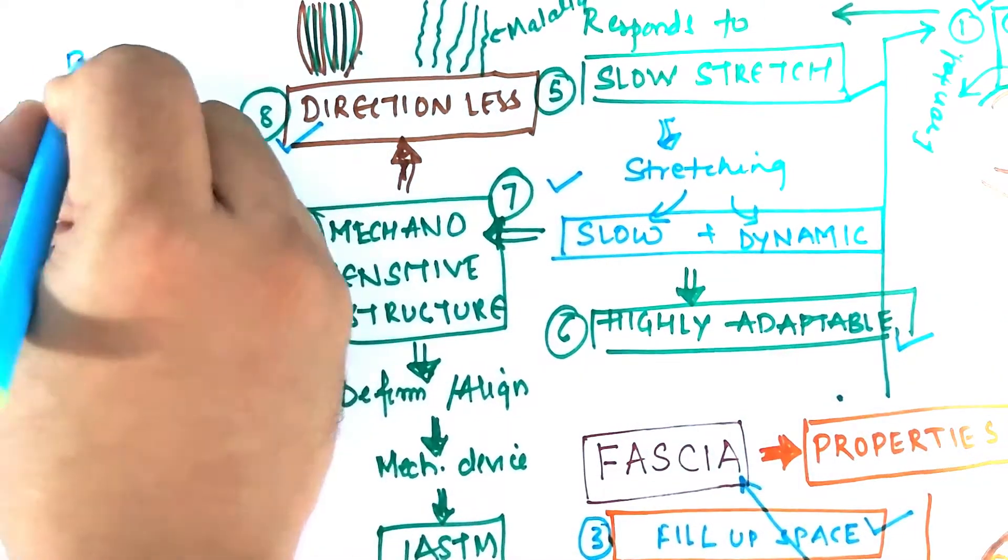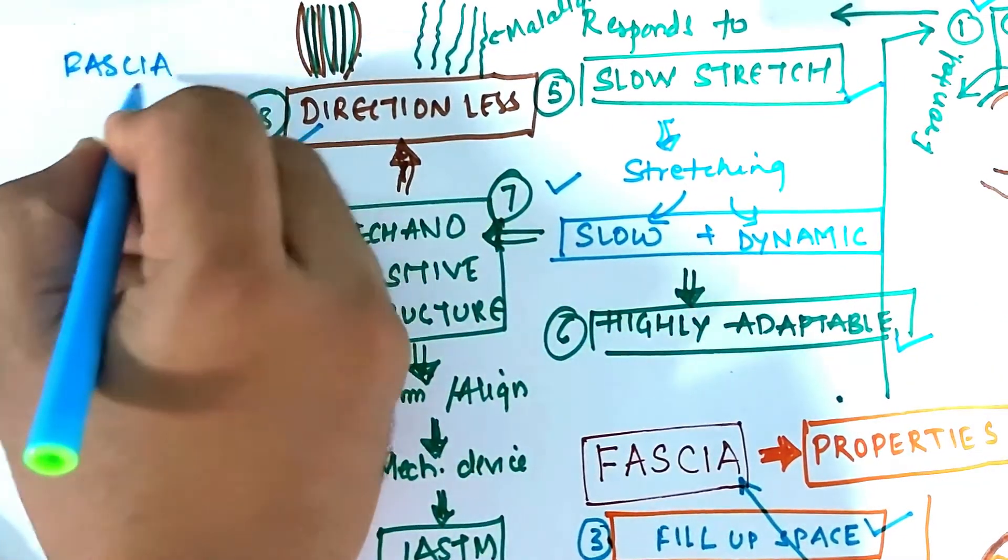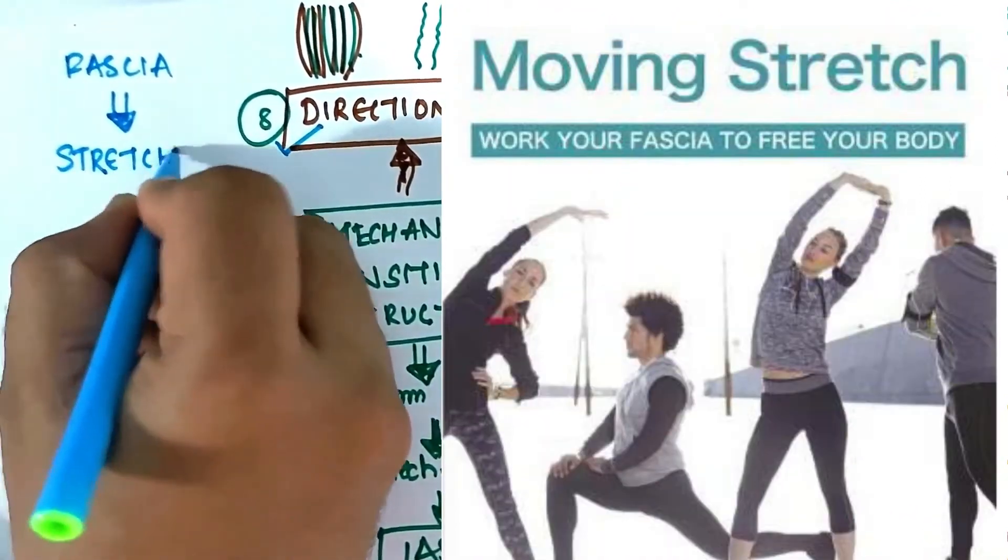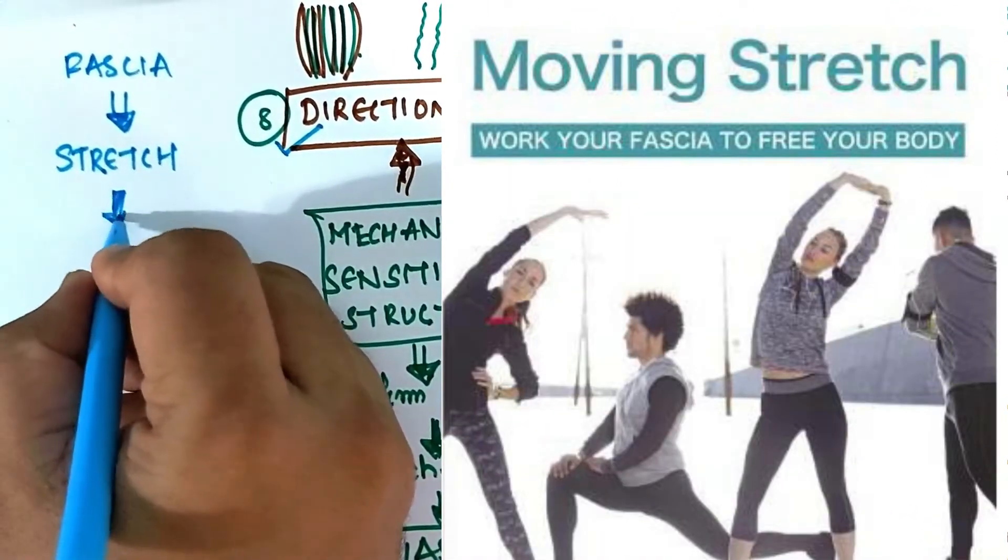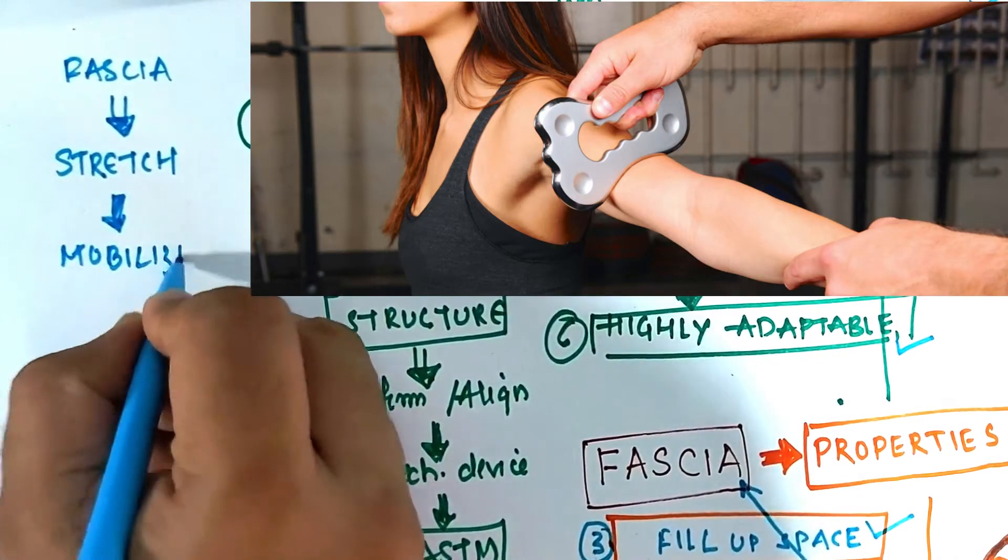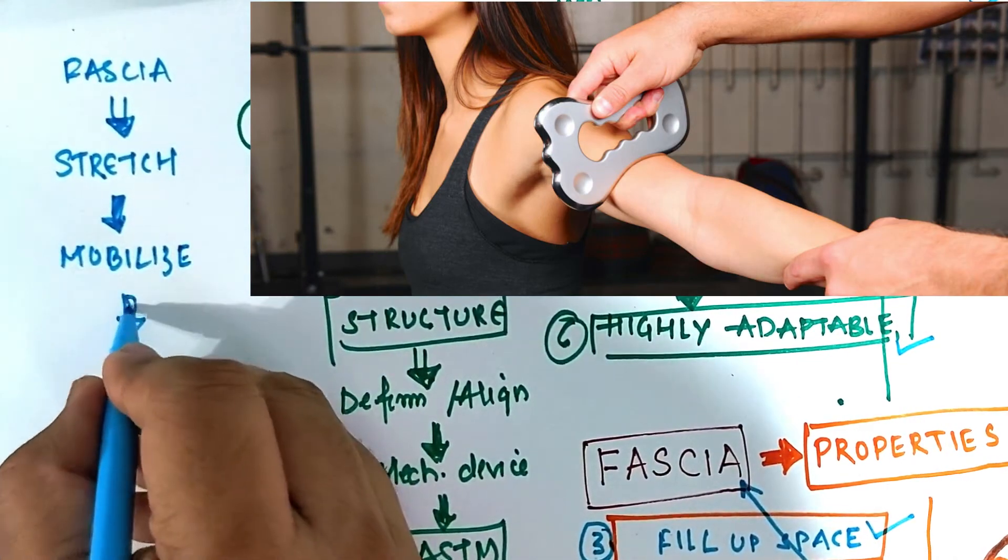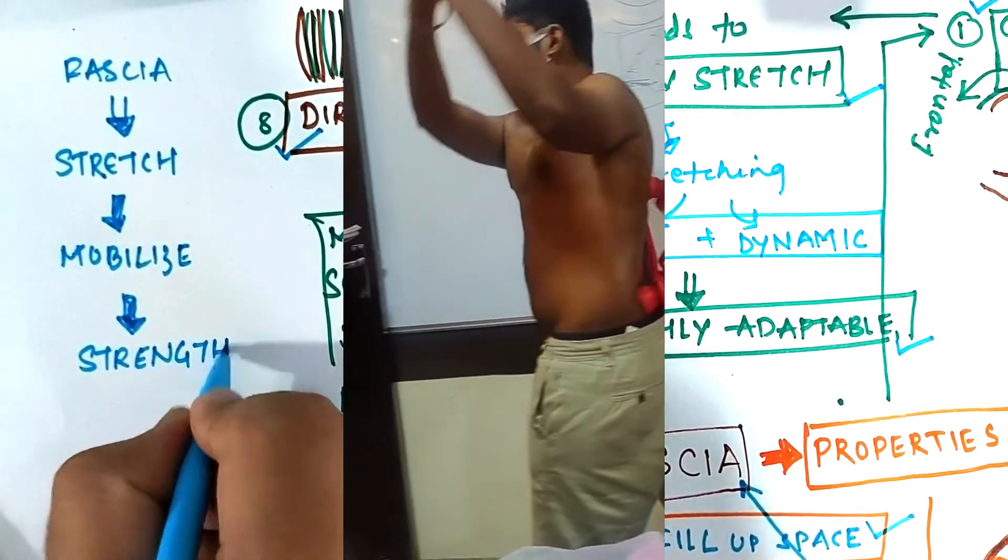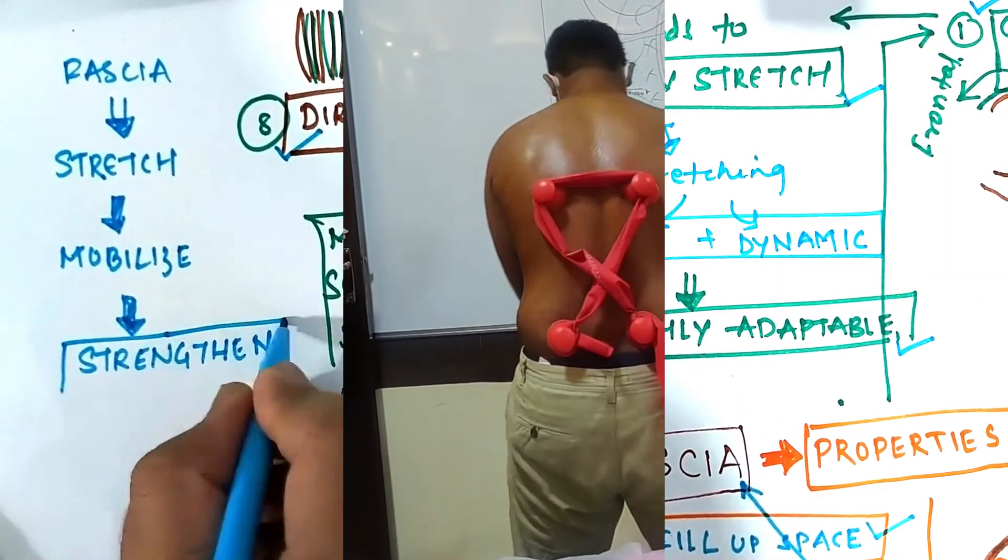So in all, what you can do with the fascia is this particular fascia and its system can easily be stretched. You can also mobilize and elongate this particular fascia. And you can also strengthen the fascia by using some assistive devices called as the dynamic cupping.